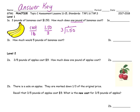Go ahead and divide. Three goes into 15 five times. Subtract, and the answer is $0.50 per pound.